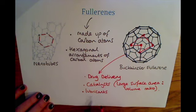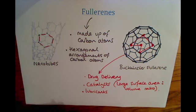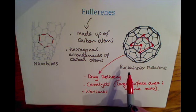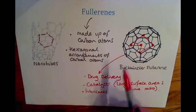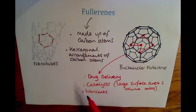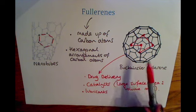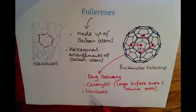Fullerenes can also be used as lubricants, which reduce friction between two surfaces. Nano-coated materials coated with Buckminster fullerene or nanotubes, or powders made from Buckminster fullerene, can be used as lubricants in machinery and engineering. Recent technology has shown that these fullerene structures can in some cases be better lubricants than conventional options and are therefore very useful for machinery.